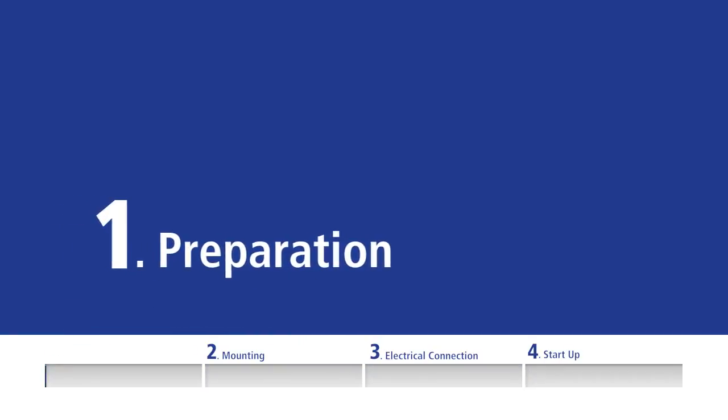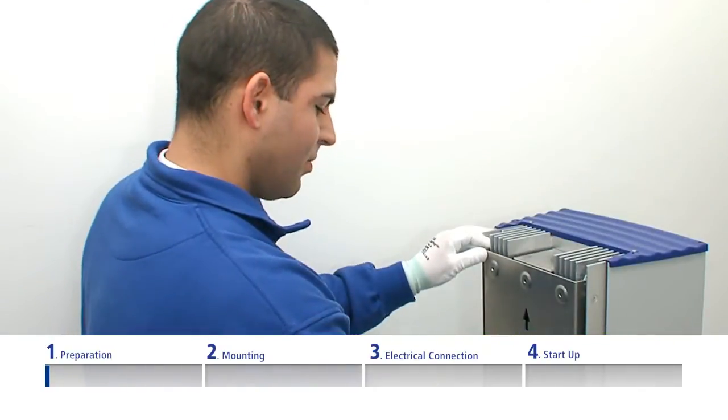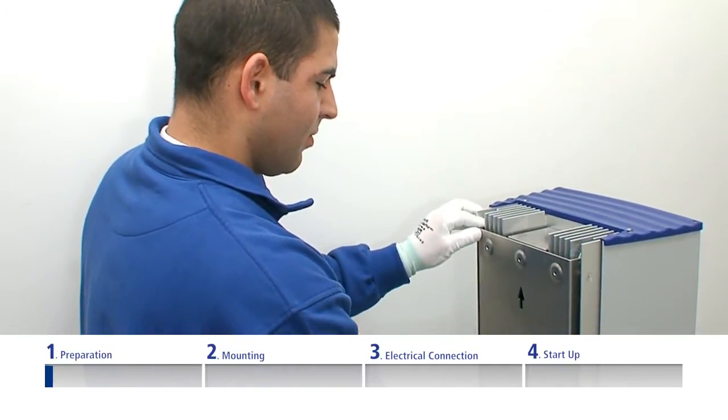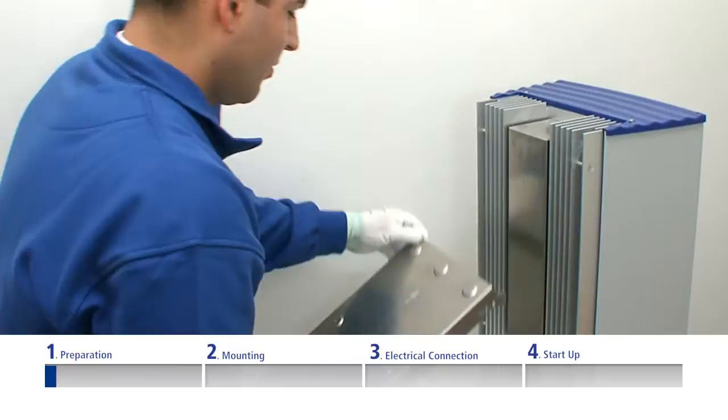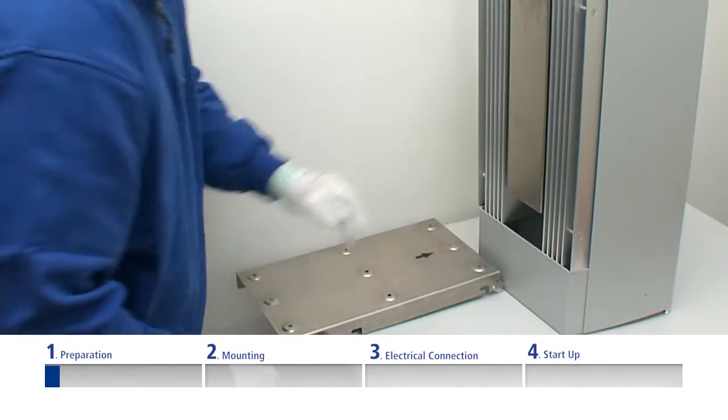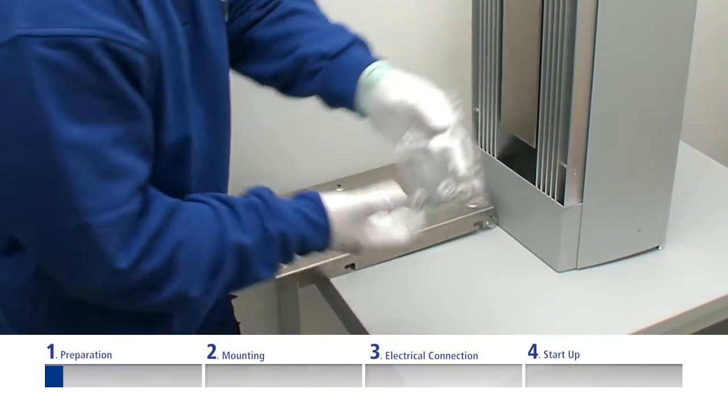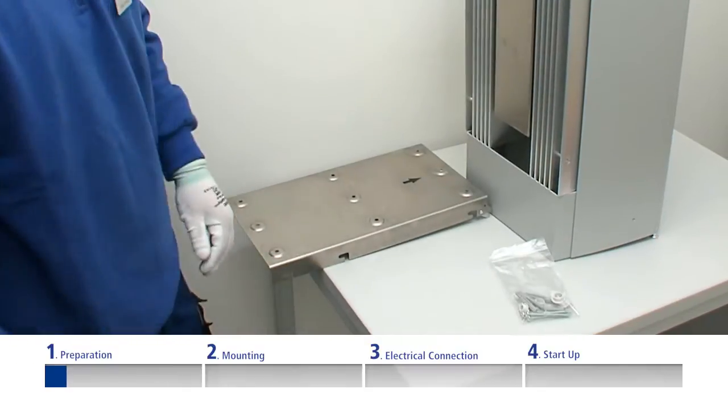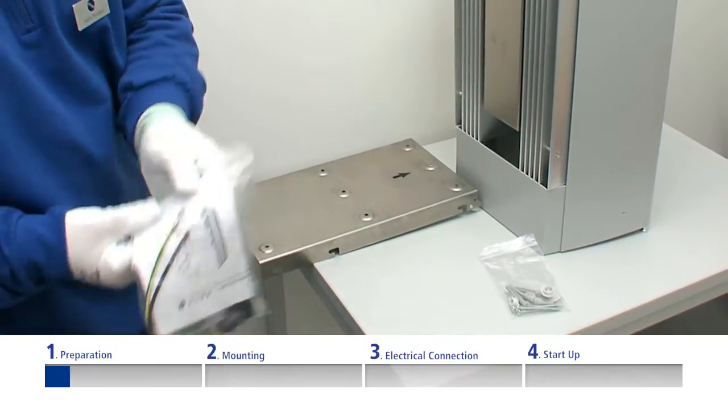Preparation. You need the following for the installation: the inverter complete with wall brackets, the fittings in the accompanying installation kit, and depending on the configuration of the system, an earthing kit may also be required.